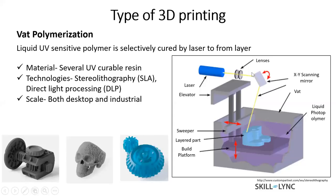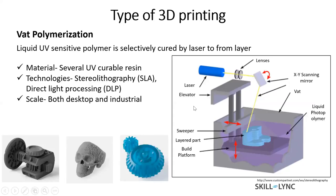You start printing, the mirror moves, it forms one layer. Once the layer is completed, your build platform moves either up or down depending on the machine. Then a sweeper cleans up the tank and provides the next layer of liquid polymer on top of the previously built layer. Interestingly, this is the first 3D printing process, patented around 1986, and the first commercial 3D printer was also a vat polymerization printer.